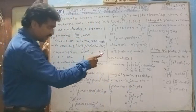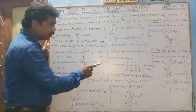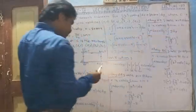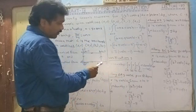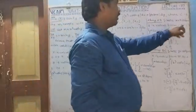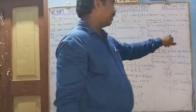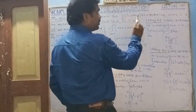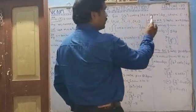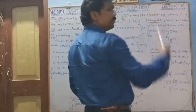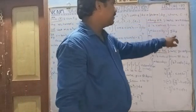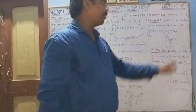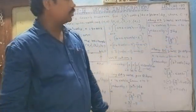Along AB: x equals π and dx equals 0, so the M dx term vanishes. y varies from 0 to 1. With x equal to π, sin(π) equals 0, so N dy reduces to y dy. Integrating y gives y squared by 2; applying limits 0 to 1 gives 1 by 2.